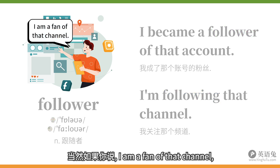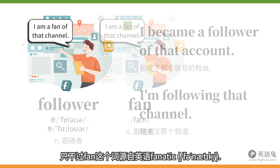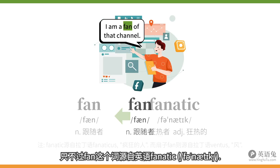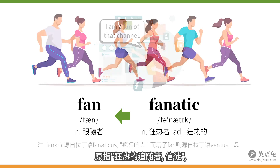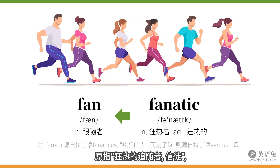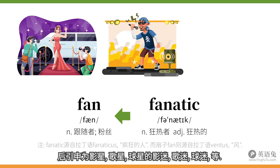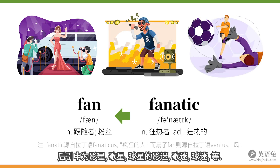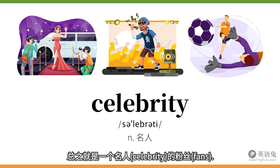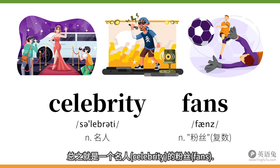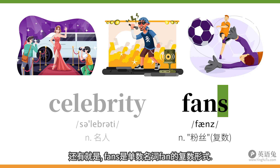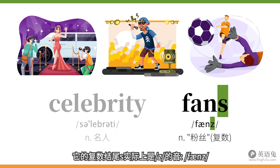当然如果你说 'I am a fan of that channel' 人家也知道你啥意思。只不过 fan 这个词源自英语 fanatic，原指狂热的追随者、信徒，后引申为影星、歌星、球星的影迷、歌迷、球迷，总之就是一个名人（celebrity）的粉丝。另外，fans 是 fan 的复数形式，复数结尾的 s 实际上发 /z/ 的音：fans。